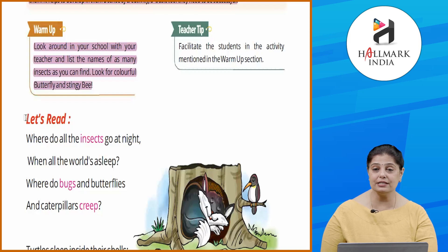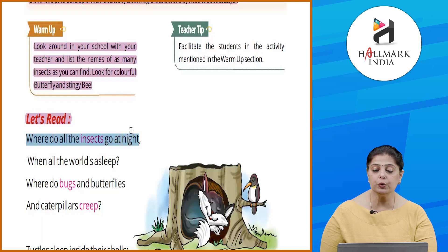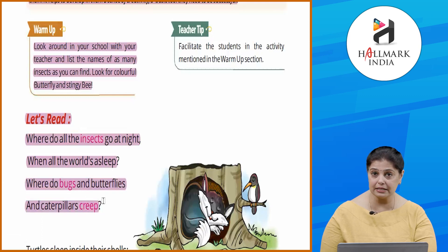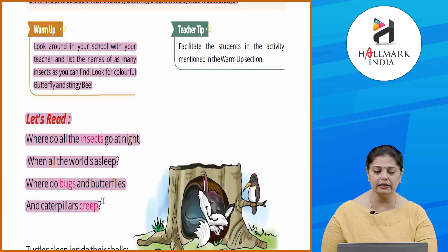Now let's read the chapter. 'Where do all the insects go at night, when all the birds are asleep? Where do bugs and butterflies and caterpillars creep?' So it's asking — raat ko insects jaate kahan hain, jab saari duniya sooti hai, tab bugs, butterflies, caterpillars kahan jaate hain?